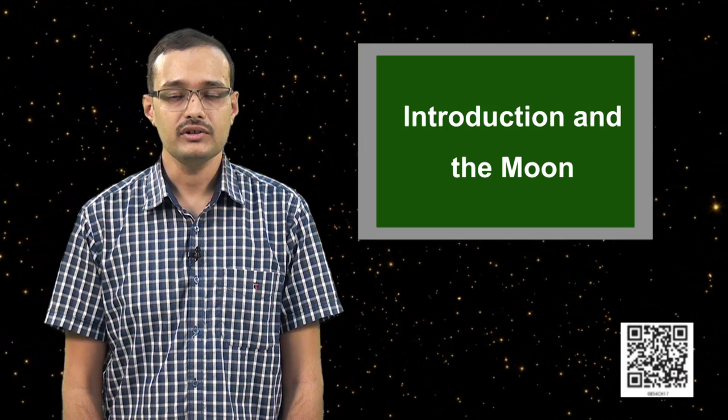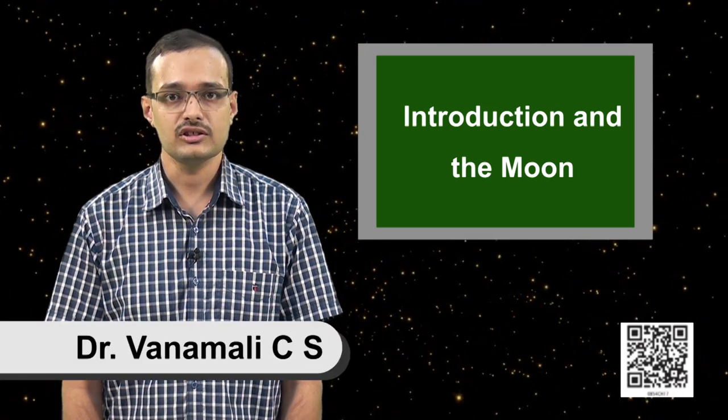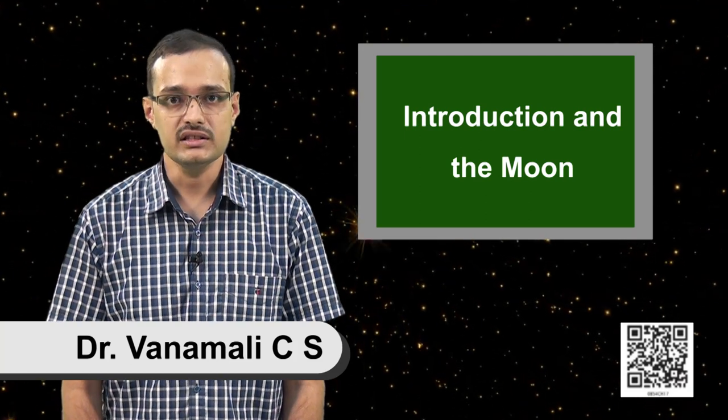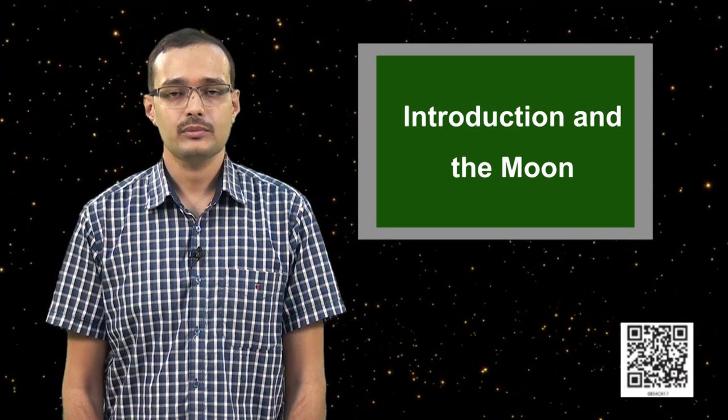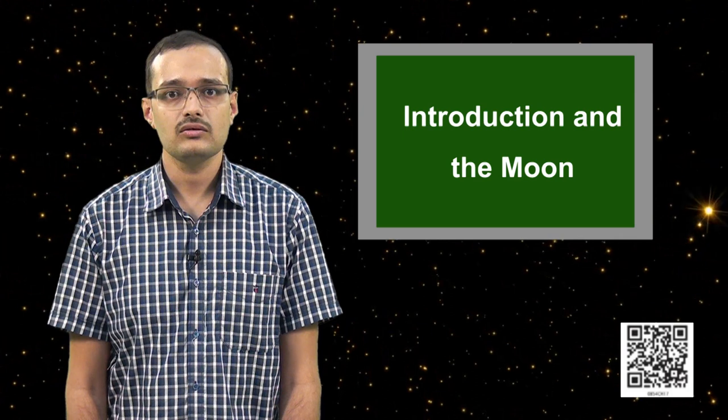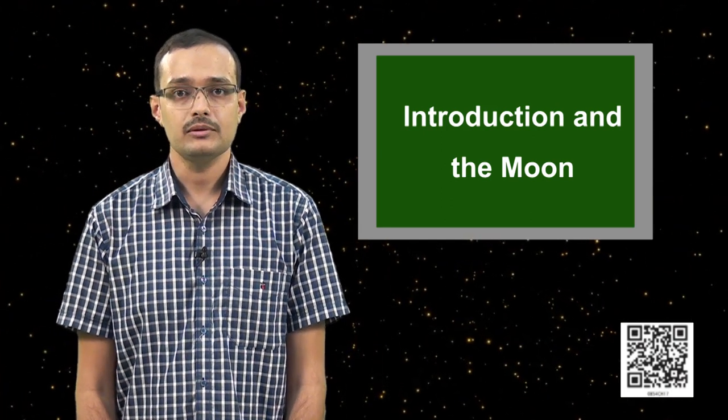So today we have seen what celestial objects are and some examples of celestial objects. We also saw what astronomers do, what astronomy is and some of the tools used by astronomers. We studied about the moon, the various properties of the moon like the faces, the eclipse. We also saw what the atmosphere of moon looks like, the craters formed on the moon among many other things. In the next class we will study about the stars. Till then take care bye.